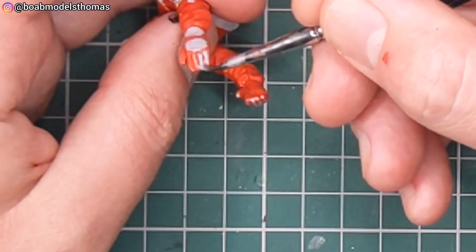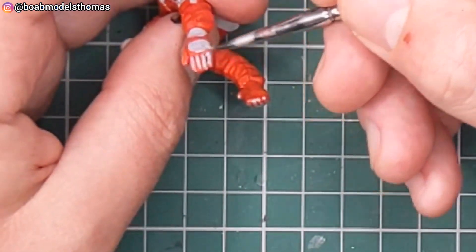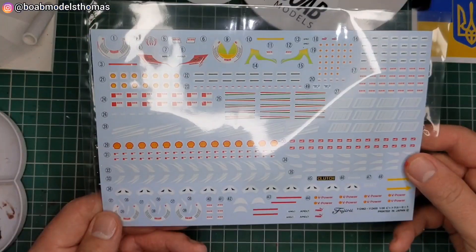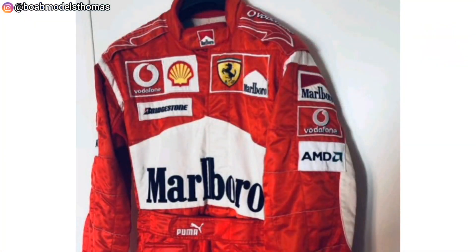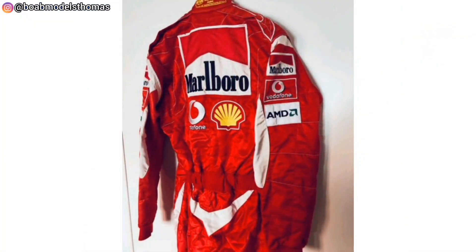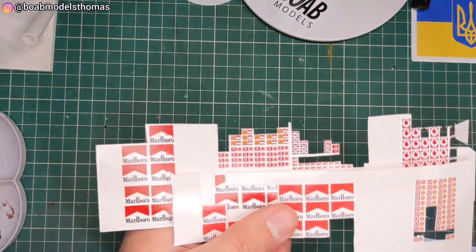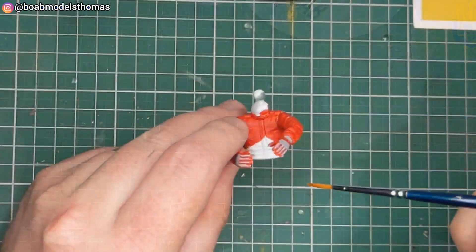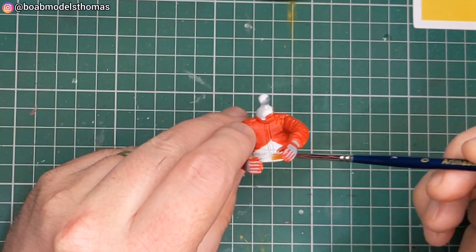Now the decals that came with this kit were for all the 2007 pit crew with the barcodes. However I looked at examples of a 2006 pit crew uniform like so and printed some extra decals to make up for the ones which are missing.